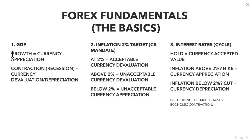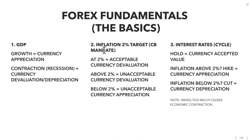Gross domestic product — when you have growth, that typically leads to currency appreciation. If you have a contraction or recession, that leads to currency devaluation or depreciation. And number two is inflation. You need to have GDP on your side — whether you want to go long or short — and then you also need to look at inflation.